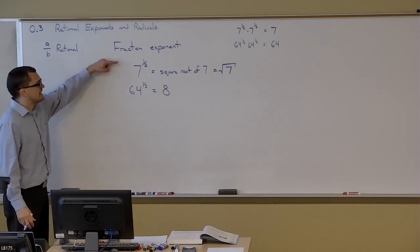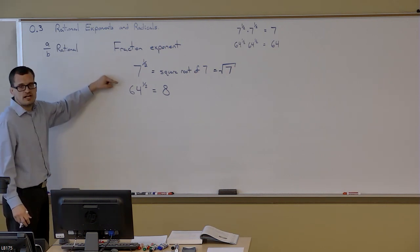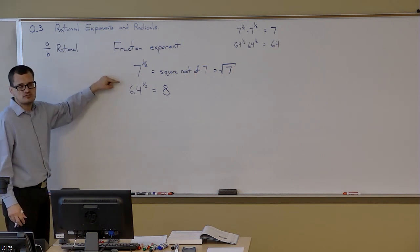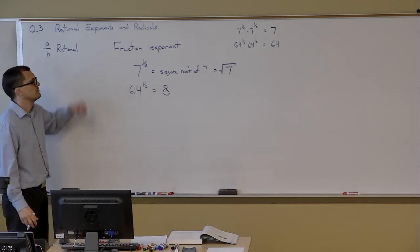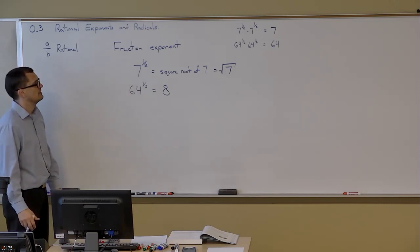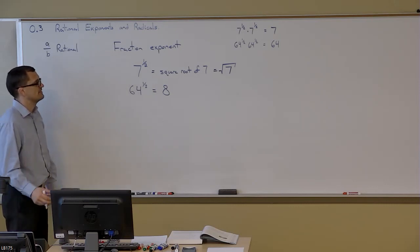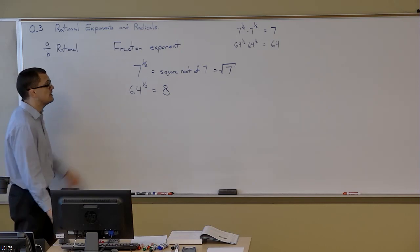We'll often use the notation where we have the square root symbol with seven underneath it. This square root symbol is the radical. That's what fractional exponents are doing — they're saying, what times what gets me to this number?